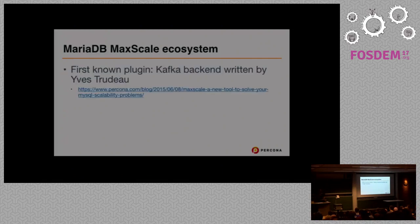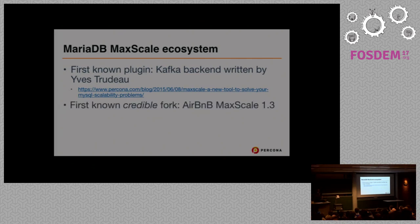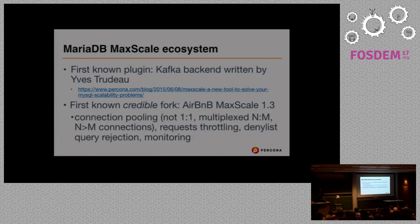MaxScale also managed to create some kind of ecosystem around it. The first known plugin was a Kafka backend written by Yves Trudeau, started probably around February of 2015 — about a month after it became GA — and announced around the middle of that year. The context was to have real-time change data capture coming in via MaxScale to a Kafka backend. This would appear in MaxScale 2.0, released in August or September of 2016. That was also the first known credible fork called Airbnb MaxScale.